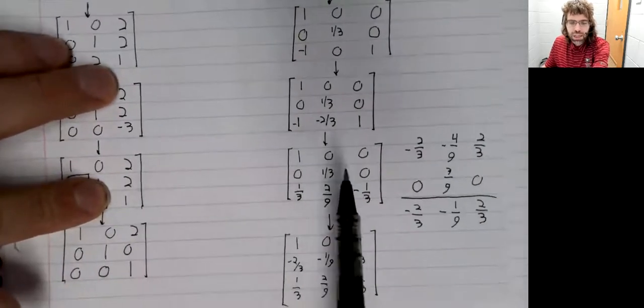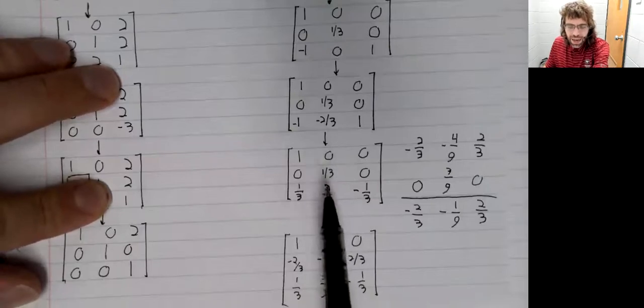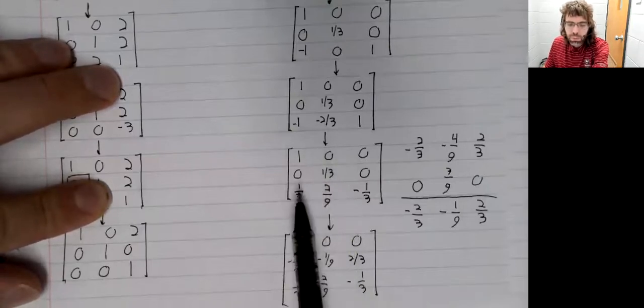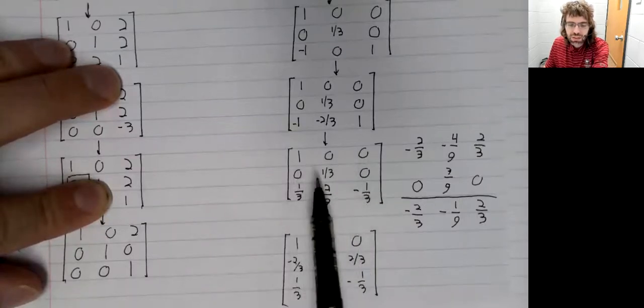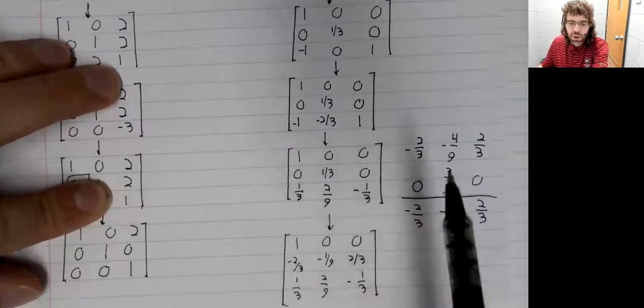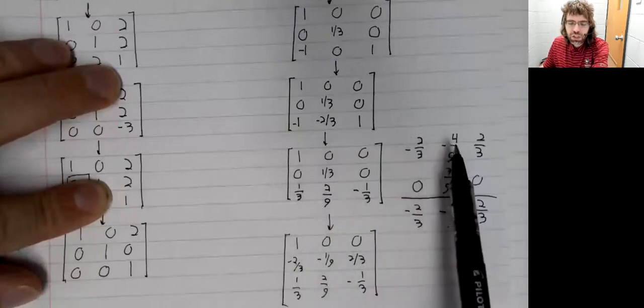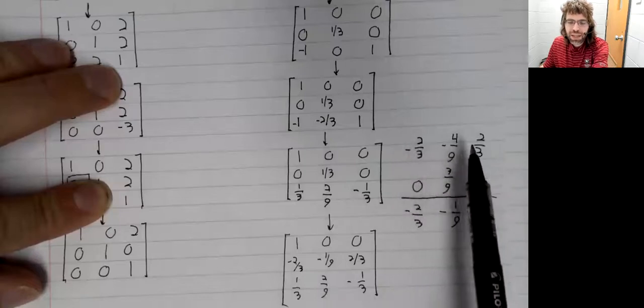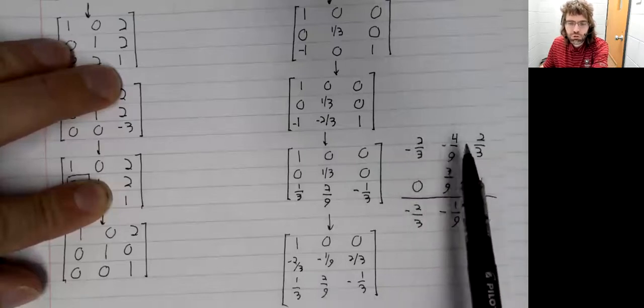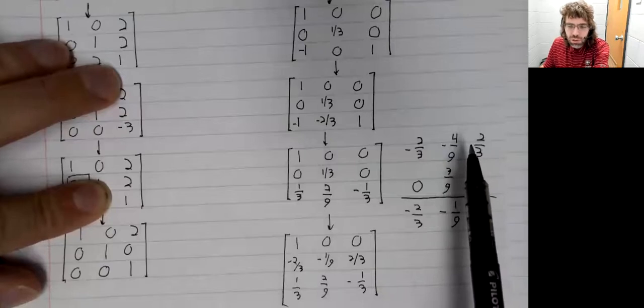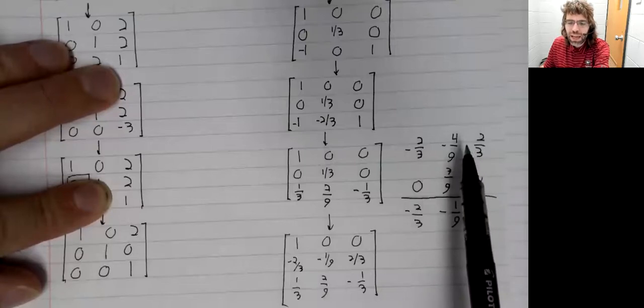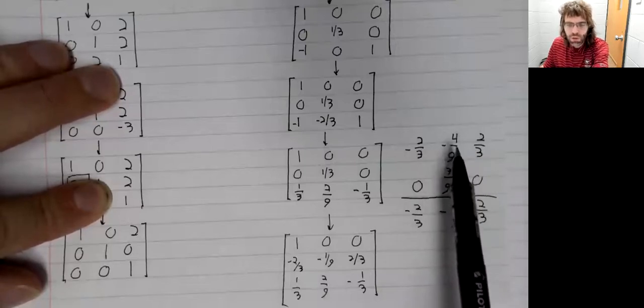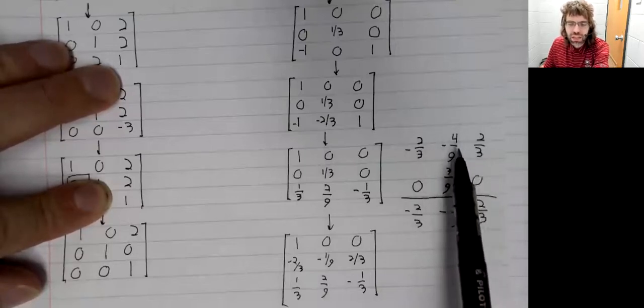Over here, though, we don't have those zeroes. When we multiplied this row by negative 2 and added it to the second row, we had to pay attention to every number in the third row. And we had to multiply all of them by negative 2 and we had to add all of those to the second row.